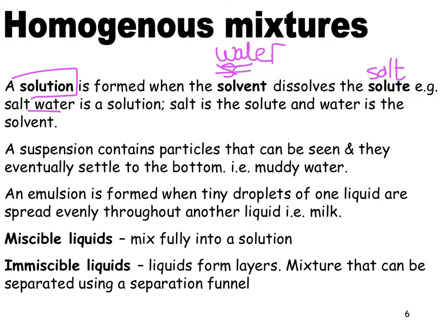A suspension is slightly different — it contains particles that can be seen and will eventually settle to the bottom, like muddy water. An emulsion is when blobs of liquid are in another form of liquid. If you take salad dressing and give it a good shake, the vinegar will make little blobs among the oil and then separate out again. While the blobs are all mixed up, you have an emulsion — tiny droplets of one liquid spread evenly throughout another liquid.